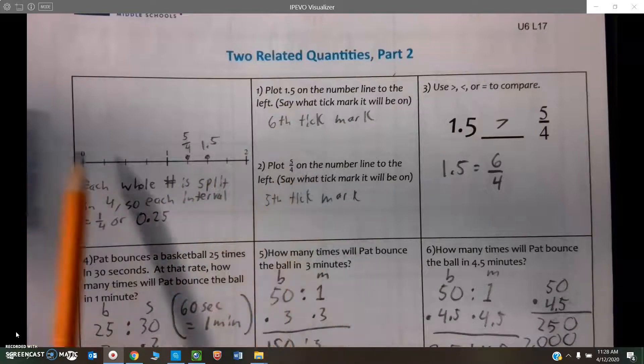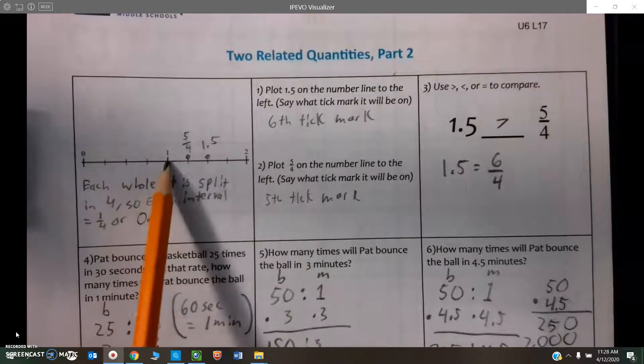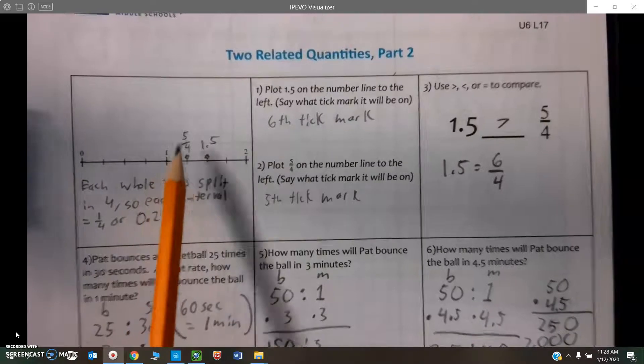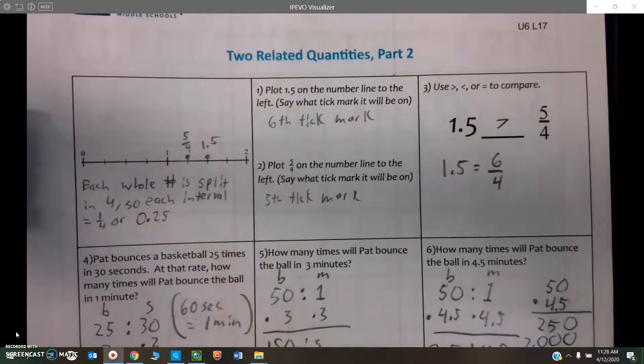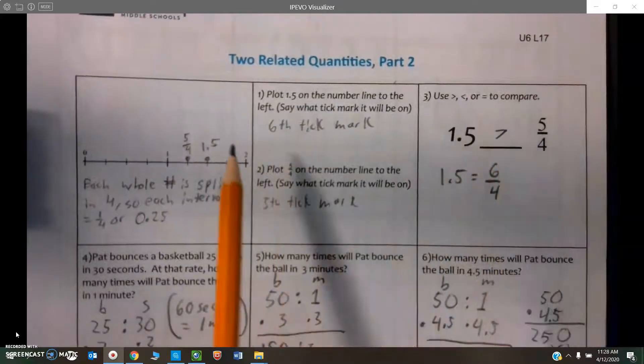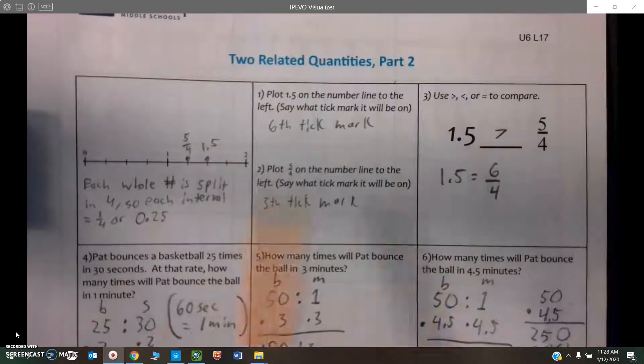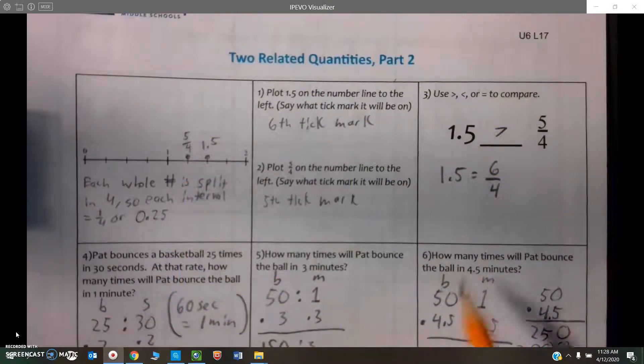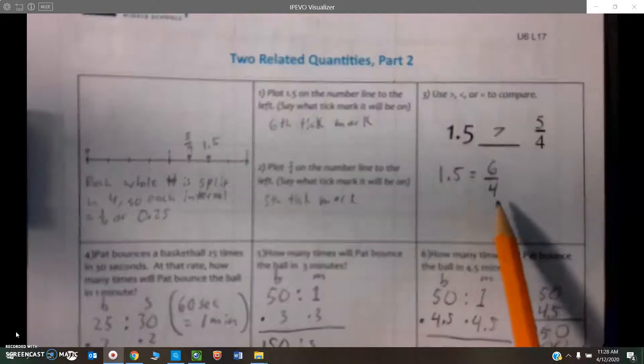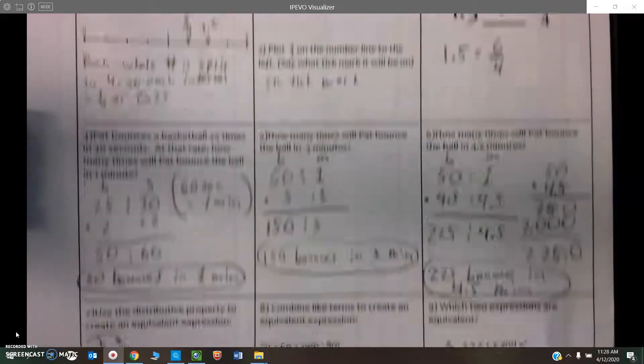And then 5/4: 1/4, 2/4, 3/4, 4/4 which is one whole, 5/4. So which one is bigger? Once again, looking at our number line, we can see that 1.5 is larger because, as a fraction, if we wanted to make it easier to compare, this would be 6/4.